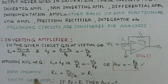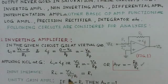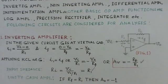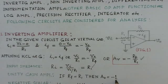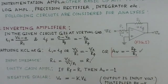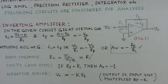Some additional observations: the input impedance Ri equals VI divided by the current VI over R1, which comes to R1. If RF is replaced by R1, the voltage gain AV becomes minus 1 — this is a unity gain amplifier with phase inversion. Another variation is a negative scalar, where V0 equals minus K times VI — the output is the input voltage multiplied by minus K.